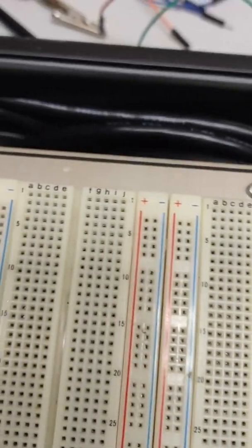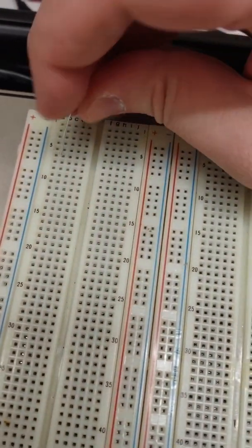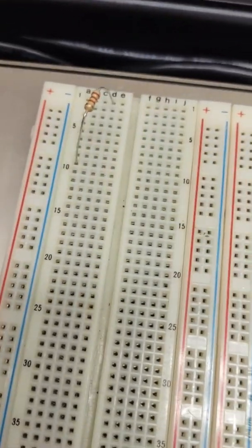So you can route a component such as a resistor from one node, say node one, to another node. That's nine.